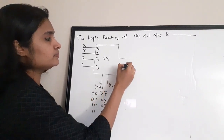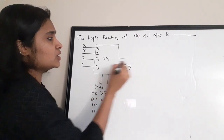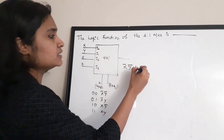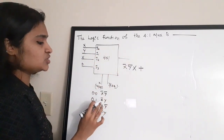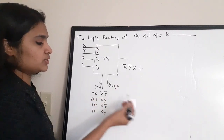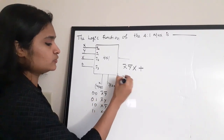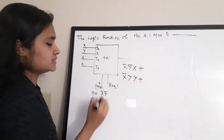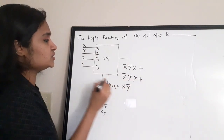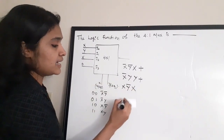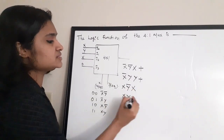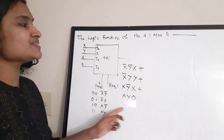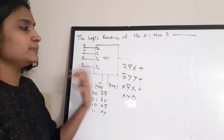When X̄Ȳ is selected, I₀ = X. When X̄Y is selected, I₁ = Y. When XȲ is selected, I₂ = X. When XY is selected, I₃ = 0. So the full expression is: (X̄Ȳ)·X + (X̄Y)·Y + (XȲ)·X + (XY)·0.